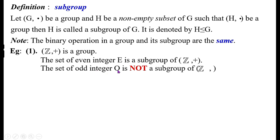The set of odd integers O is not a subgroup of (Z, +). The reason is that 0 is not an odd number, and hence the identity axiom fails. Also, the closure axiom fails because the sum of two odd numbers is an even number, which does not belong to O — it belongs to E.